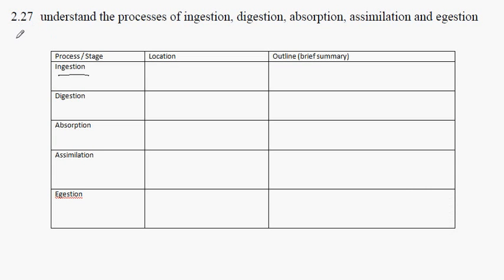GCSE Biology syllabus statement 227, the stages of the digestion of food. We begin with stage 1, which is ingestion.